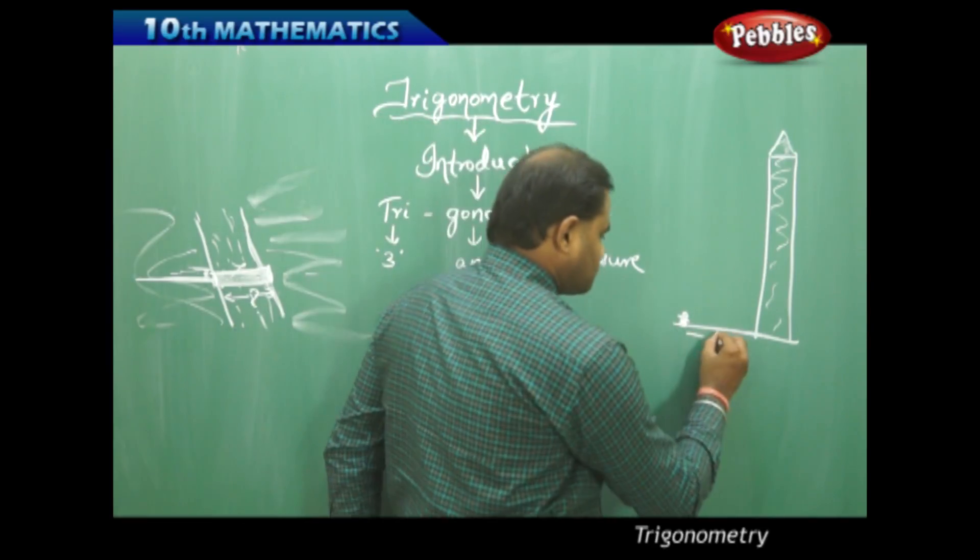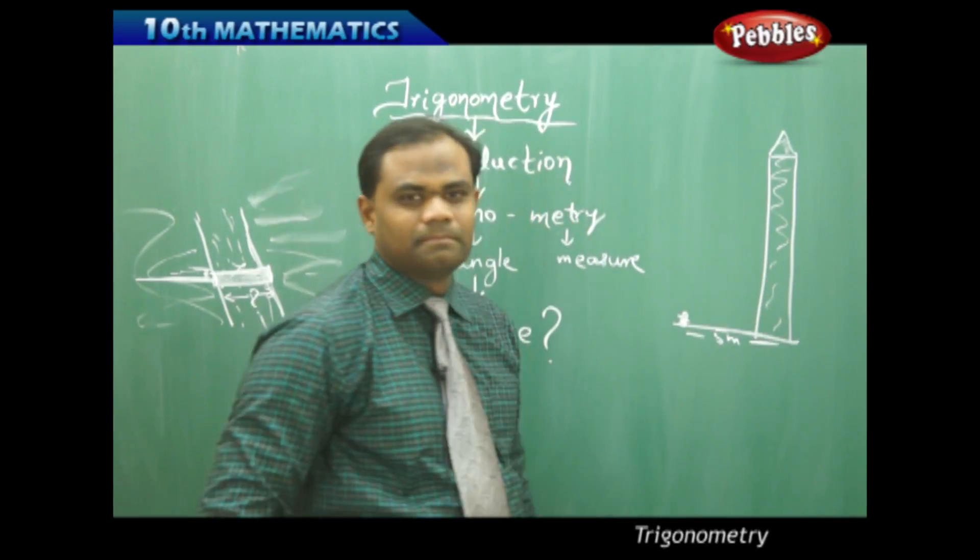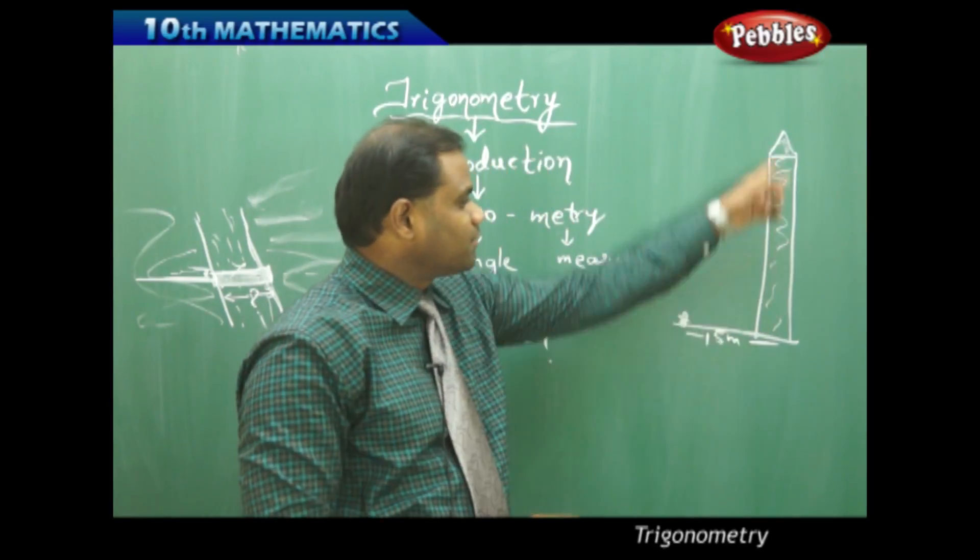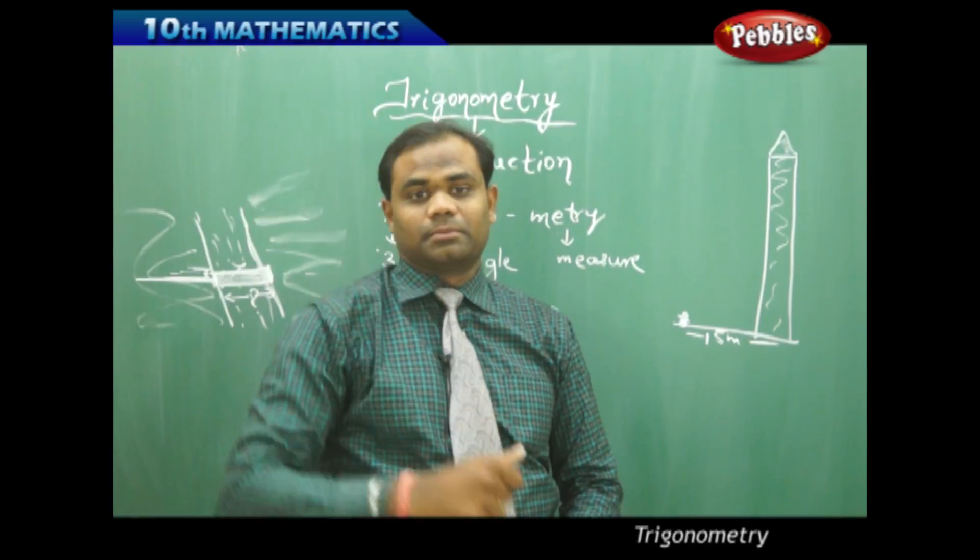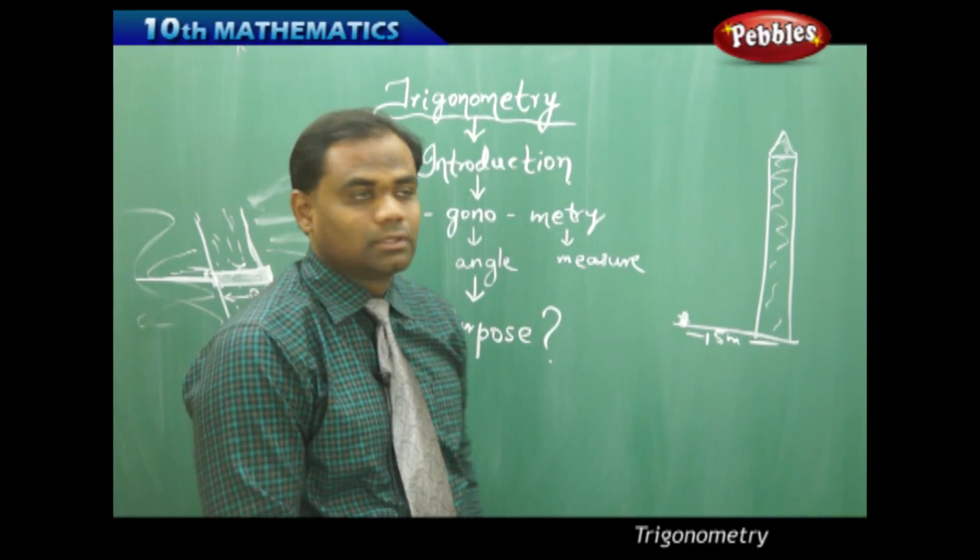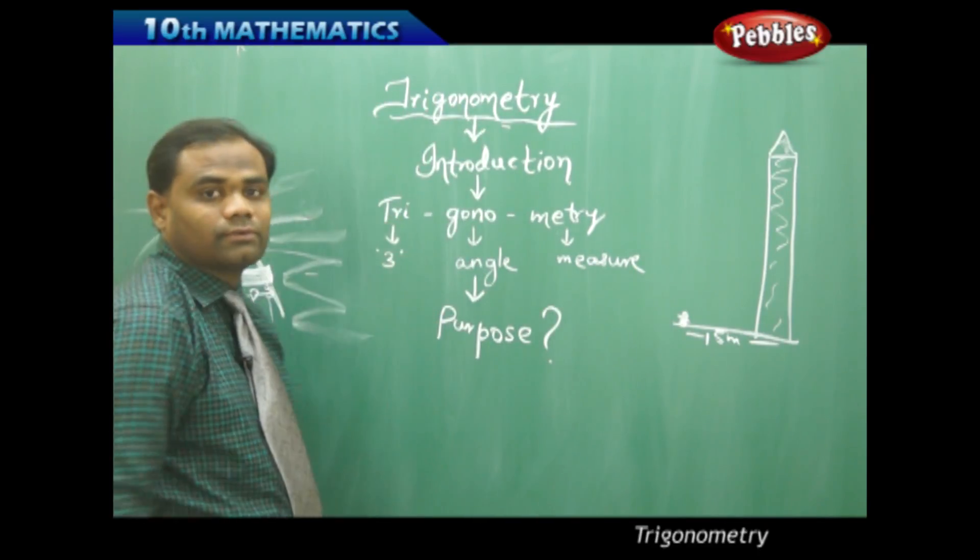I just stand here and then I want to find the height of the Qutub Minar by just standing here, which is just 5 meters away from here or 15 meters away from here. Then how do I find the height of the Qutub Minar without actually measuring with tape? It is possible using the topic of trigonometry.